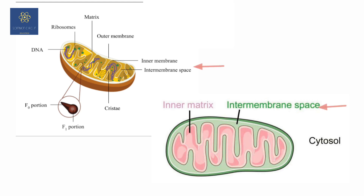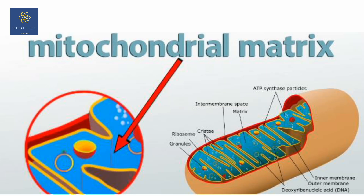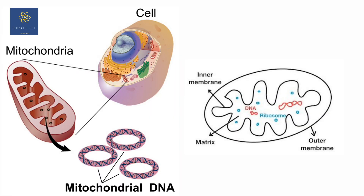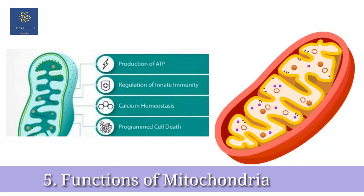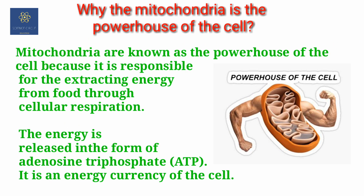The inter-membrane space has a composition similar to that of the cytosol. The matrix is the place where most of the metabolic reactions take place. The matrix also possesses a single circular DNA molecule, a few RNA molecules, and ribosomes of 70S.